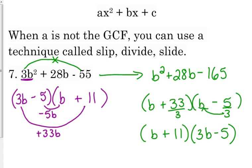Slip. First coefficient slips to the end. You multiply. You factor. Then you divide by that original leading coefficient. If it divides evenly, you go ahead and do that. If it reduces, go ahead and reduce it. And then, if it still has a denominator, you slide that to the front of that factor.